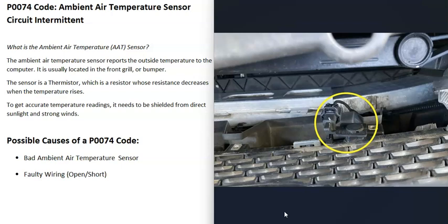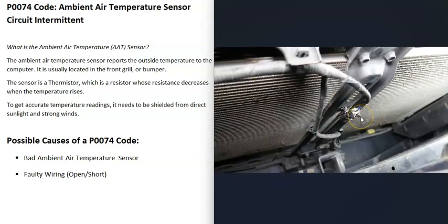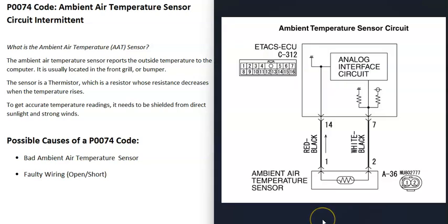The first thing that could cause this is a bad ambient air temperature sensor. The next thing that could cause this is the wiring going to the sensor. If there's any kind of problem inside the wiring — like an open or a short — that's going to cause problems. You can get wiring schematics for your particular vehicle, because there will be differences. With a multimeter, you can check the wiring and make sure there's no open or short, because wiring problems are another common cause.